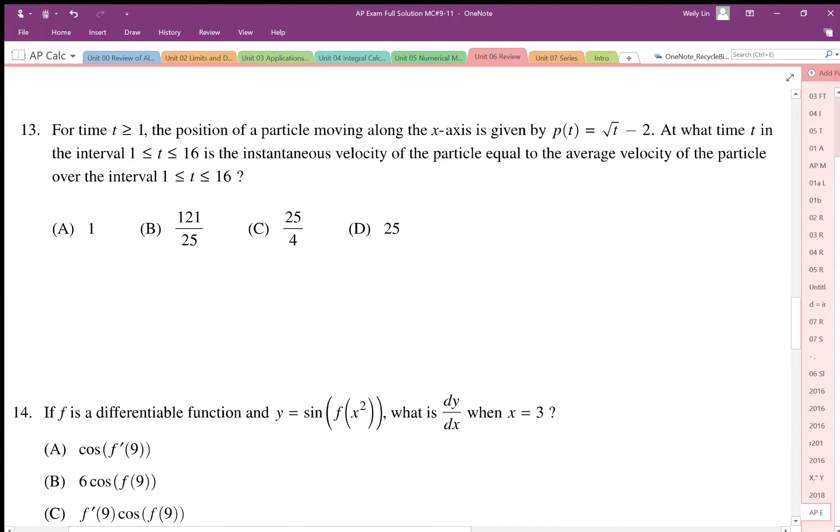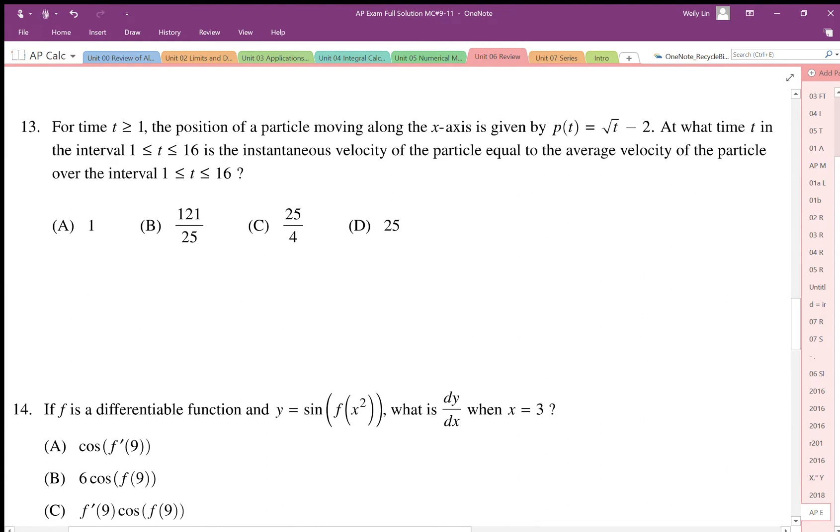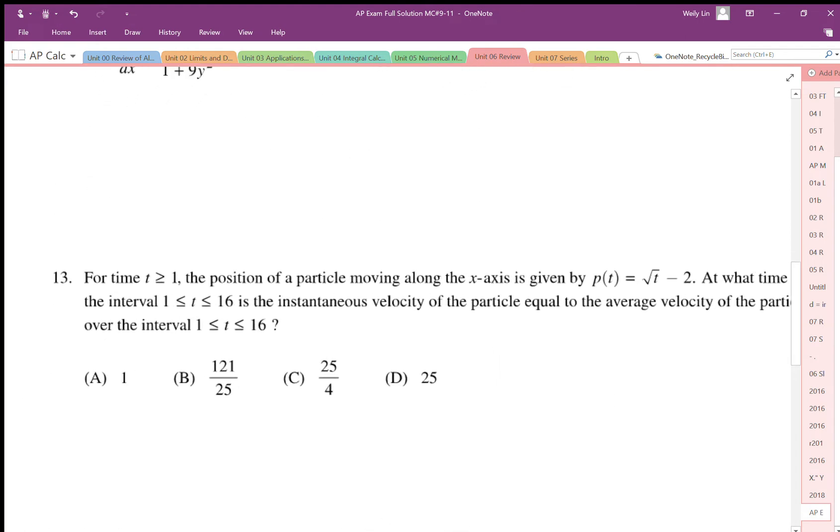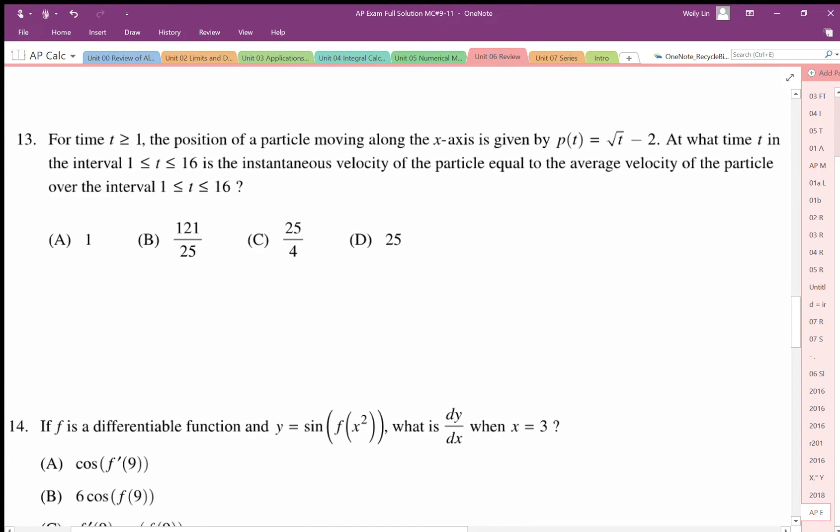For number 13, it says for time is greater than 1, a particle's moving along the x-axis given the p function root t minus 2. In the time interval from 1 to 16, when is the instantaneous velocity equal to the average velocity? The average velocity is same as average slope.